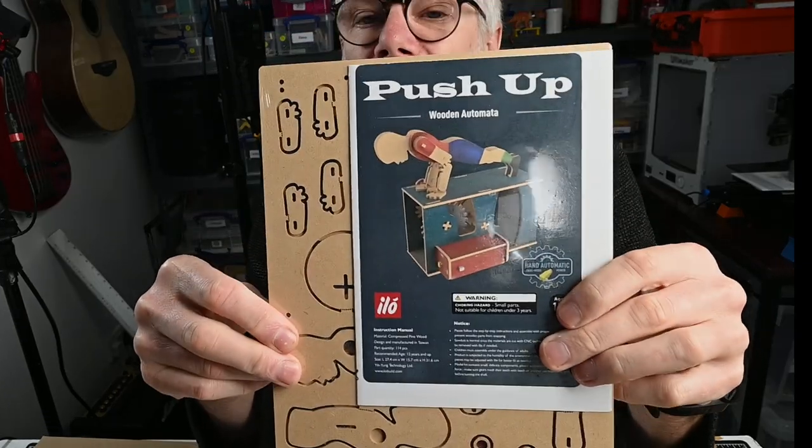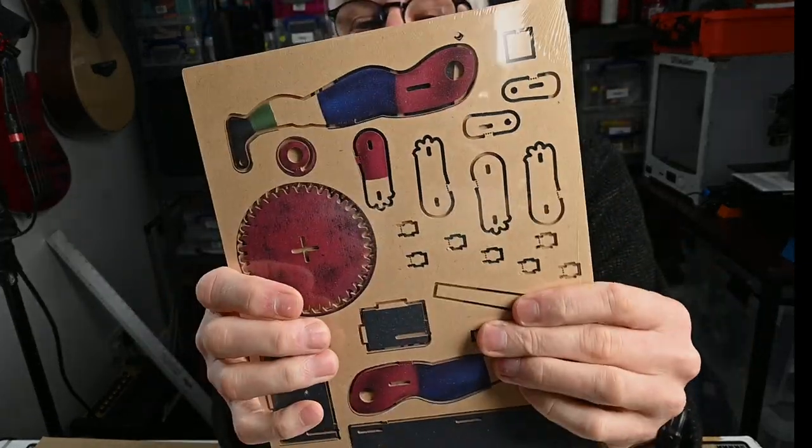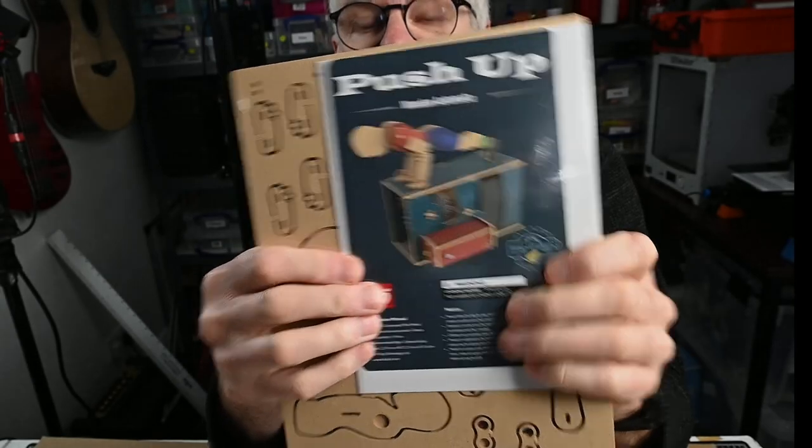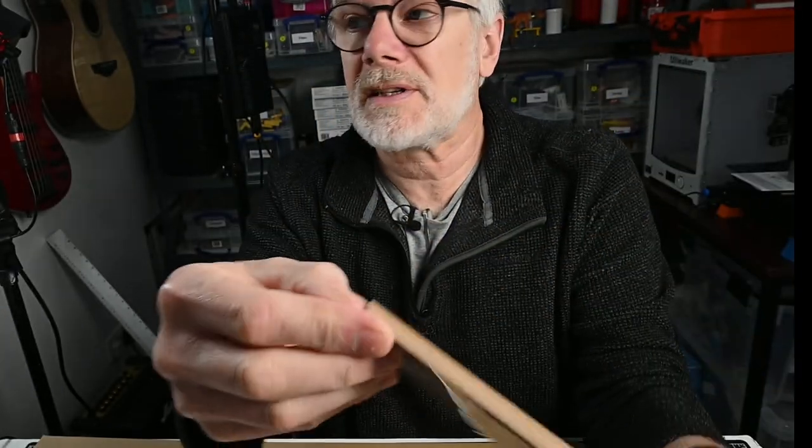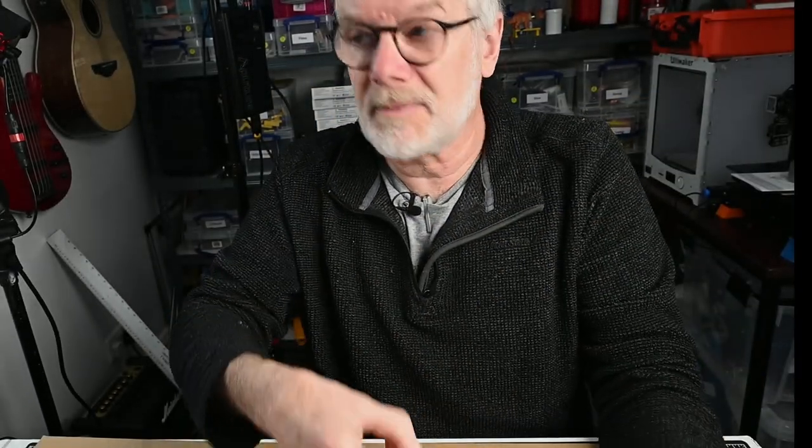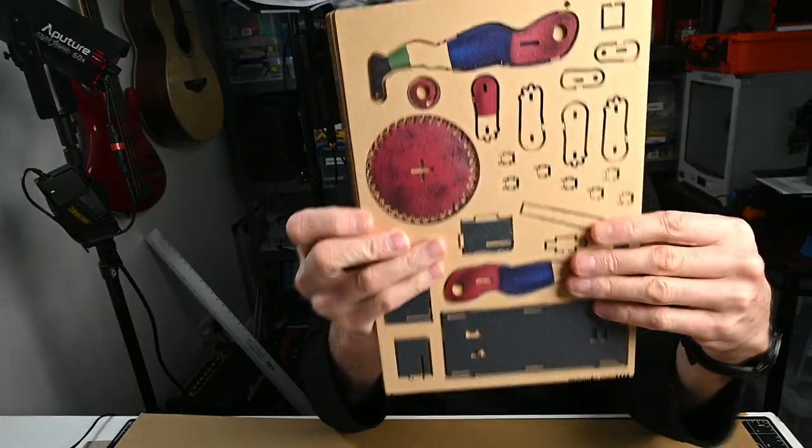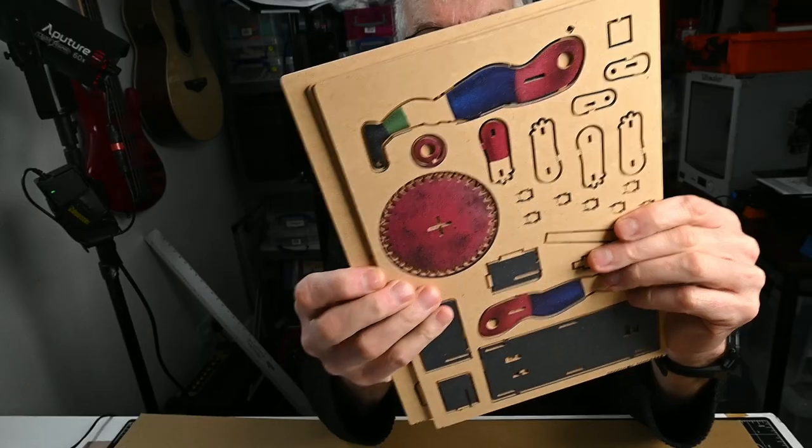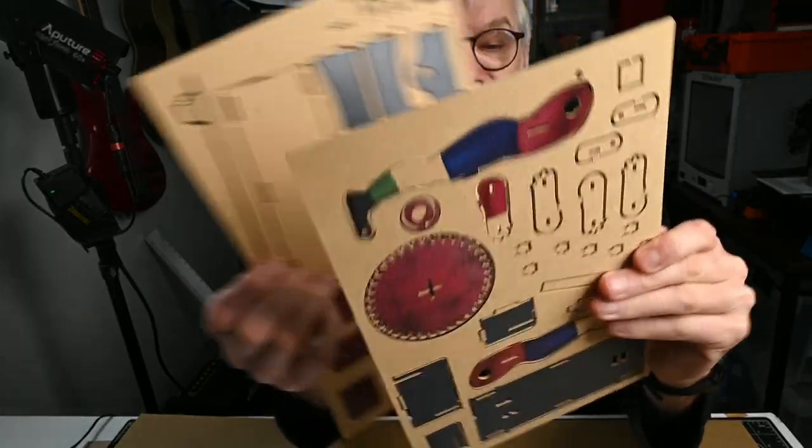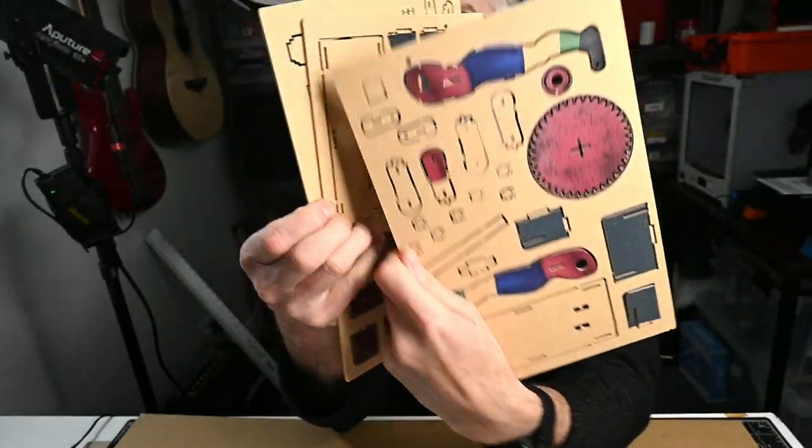So we're going to unbox it like that and see what's inside. So inside we have all the parts and the instructions, slip the plastic like that. We have part sheets ready to pop out.